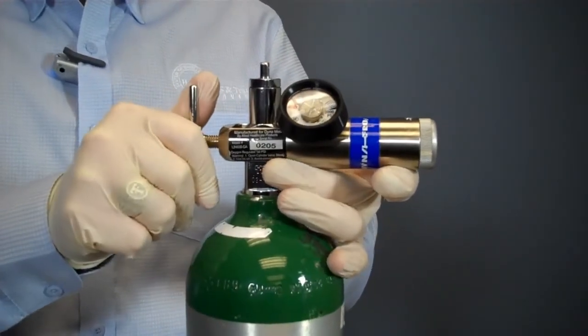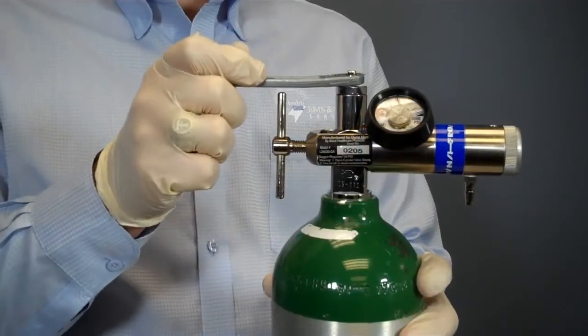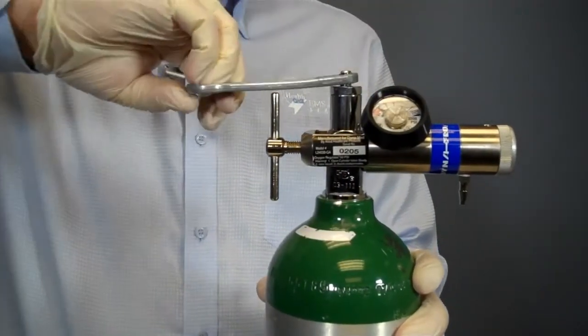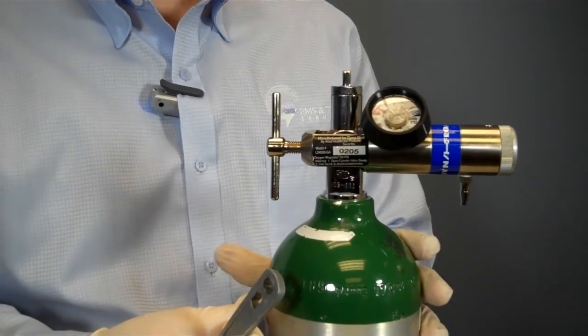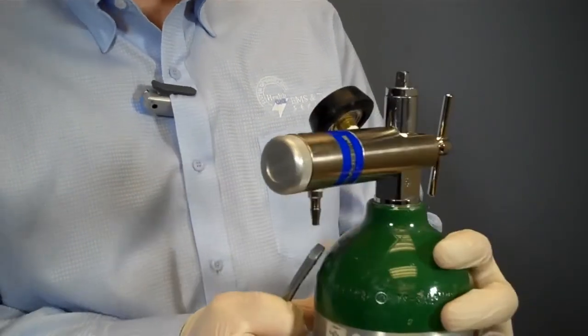I will open the tank valve by turning the key one full turn counterclockwise. Now I will state the pressure in the tank as determined from the reading on the pressure gauge. Finally, I will check to make sure there are no leaks around the regulator.